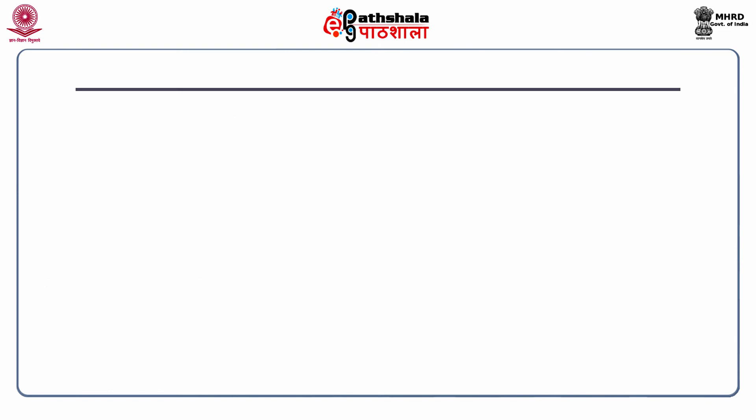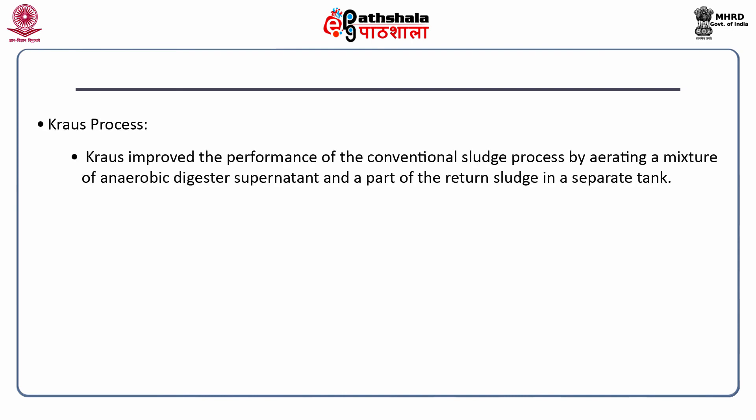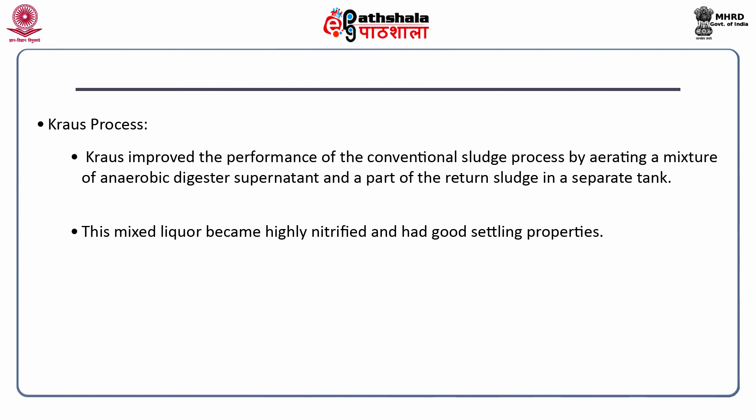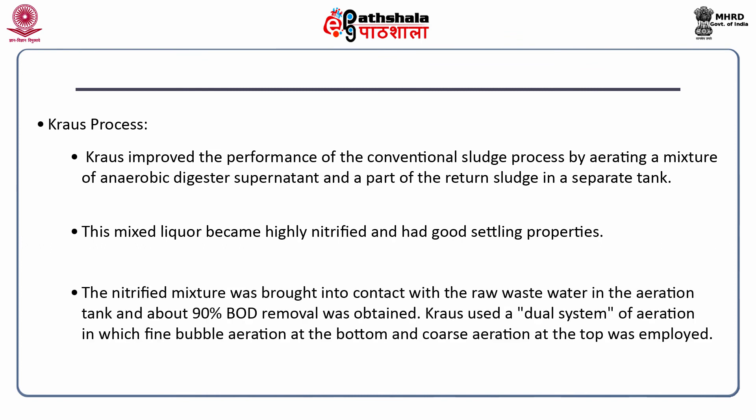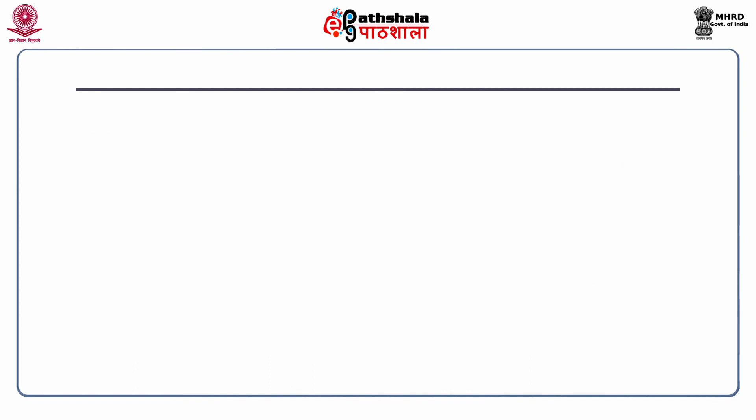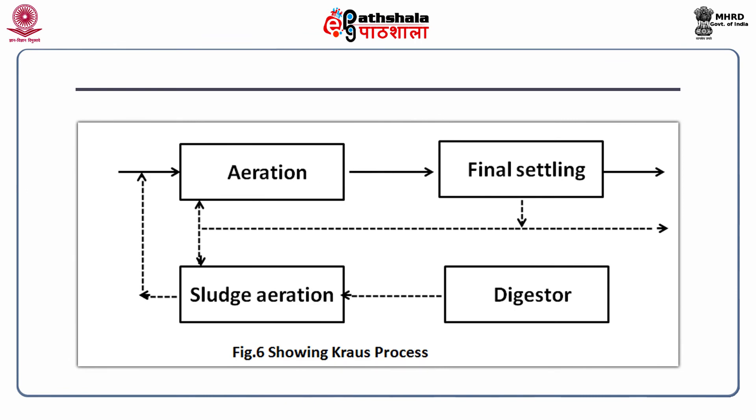Another modification is the Kraus process. This process improves the performance of the conventional sludge process by aerating a mixture of anaerobic digester supernatant and a part of the return sludge in a separate tank. This mixed liquor becomes highly nitrified and has good settling properties. The nitrified mixture is brought into contact with raw wastewater in the aeration tank and about 90% BOD removal is obtained. The Kraus process uses a dual aeration system with fine bubble aeration at the bottom and coarse aeration at the top. This figure shows the modification made in the activated sludge process while applying the Kraus process.